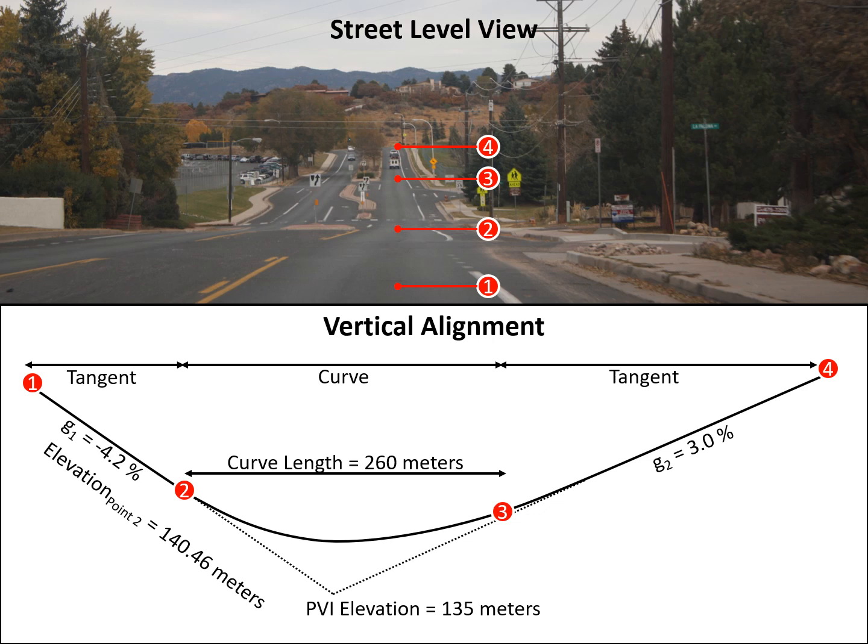We do have some values for these particular points on this curve. The actual length of the curve is 260 meters, and again, that is measured horizontally. Our entrance grade, G1, is negative 4.2%, and our exit grade, G2, is 3%.